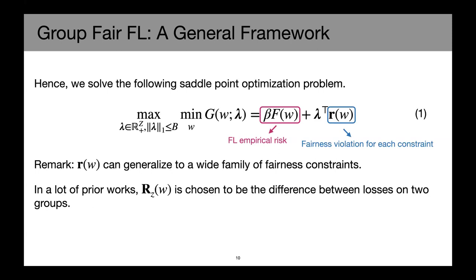So to solve the constraint optimization problem, we rely on solving this saddle point optimization problem by introducing the dual variable lambda. Here this beta F(w) is the federated learning empirical risk and this small R(w) could be viewed as the fairness violation for each constraint. This R(w) can generalize to a wide family of fairness constraints.